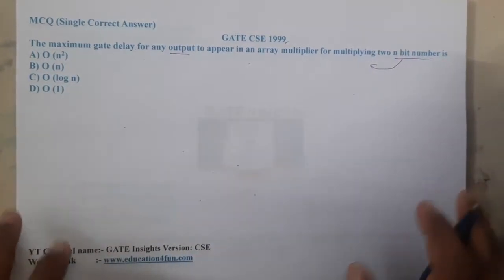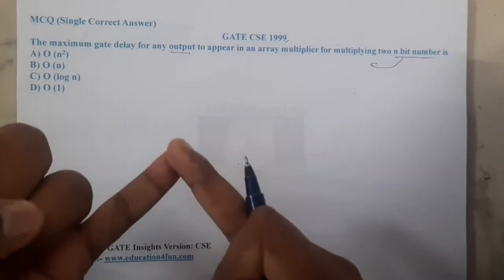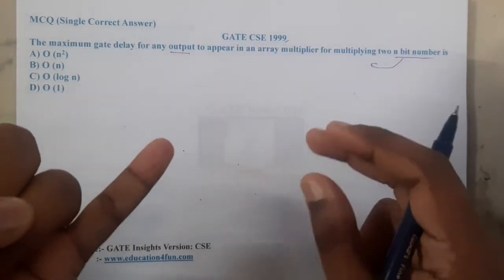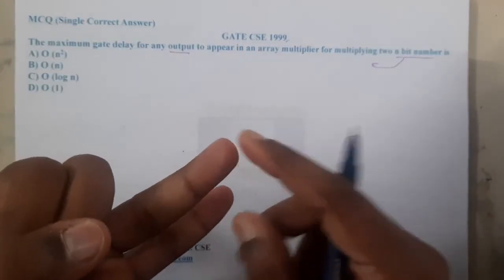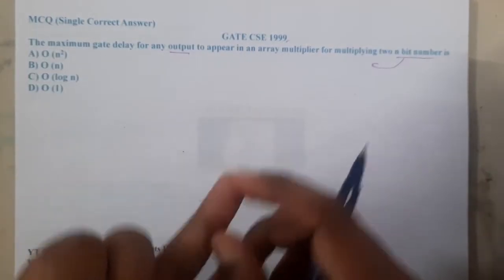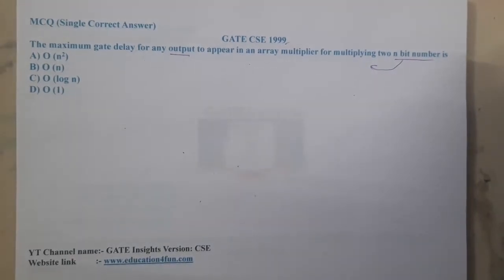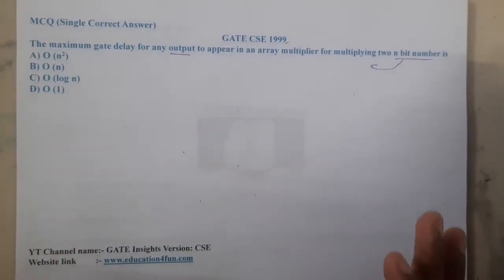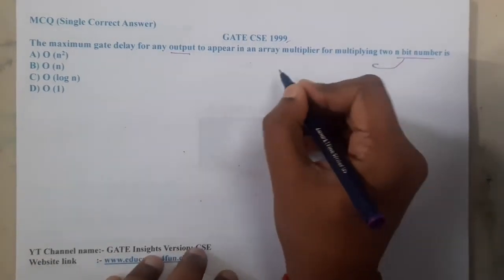Before understanding this question, you should have a clear idea with respect to digital electronics — multiplying two n-bit numbers — and you should have a clear idea of how complexity, like asymptotic relations, work. So first let us try to understand how exactly multiplication works.